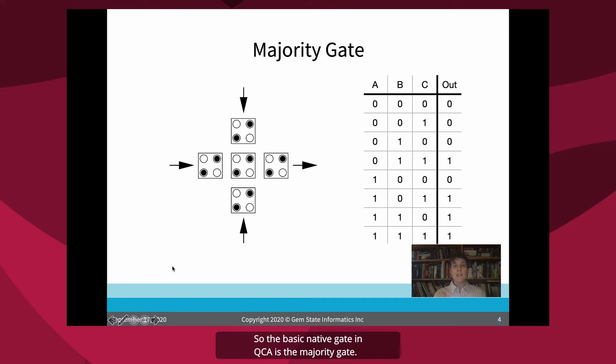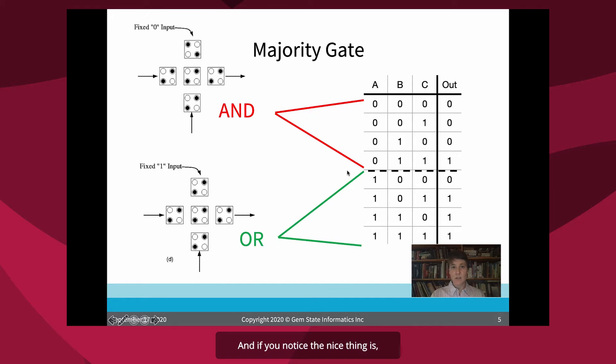So the basic native gate in QCA is the majority gate. So you have three inputs, A, B, and C, and one output. And then here in the middle is sort of the computation where the computation happens for the majority gate. And if you notice, the nice thing is it looks a lot, the truth table here looks a lot like an AND gate and an OR gate in the same gate, because it is.